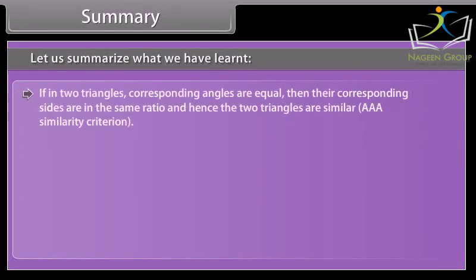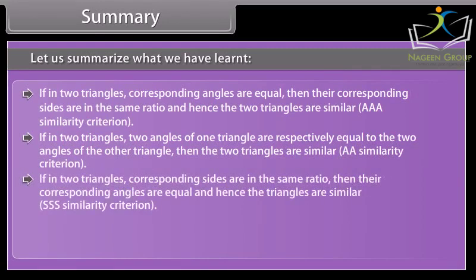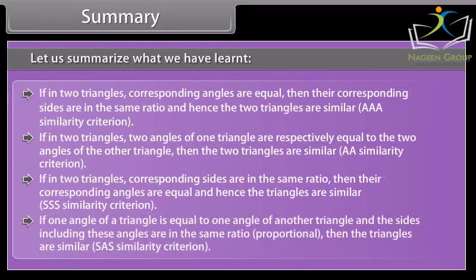If two triangles' corresponding angles are equal, then their corresponding sides are in the same ratio and hence the two triangles are similar by AAA similarity criterion. If two angles of one triangle are respectively equal to two angles of another triangle, then the two triangles are similar by AA similarity criterion. If corresponding sides are in the same ratio, triangles are similar by SSS similarity criterion. If one angle of a triangle equals one angle of another and the sides including these angles are proportional, then the triangles are similar by SAS similarity criterion.